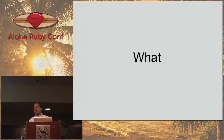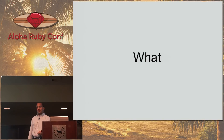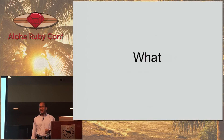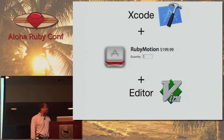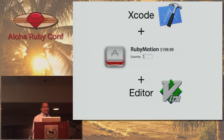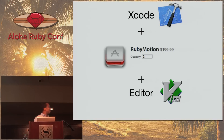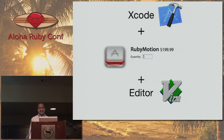What is RubyMotion? RubyMotion lets you as a Ruby developer write iOS apps. The apps you're writing with RubyMotion are compiled into LLVM bytecode — these are compiled apps, they're not interpreted. In order to run RubyMotion, you need to have a Mac running OS 10 and Xcode. You buy RubyMotion for $200 at RubyMotion.com and you need an editor. I use Vim, but you can use TextMate, Sublime, Emacs, or any other editor you prefer.